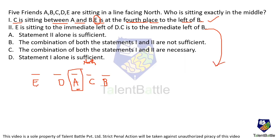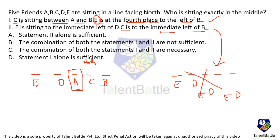Statement two says: E is sitting to the immediate left of D, and C is immediate left of B. Using statement two alone, multiple positions are possible for each pair — we cannot exactly determine who is in the middle. Statement one alone was sufficient to answer the question, so the answer is option D: statement one alone is sufficient.